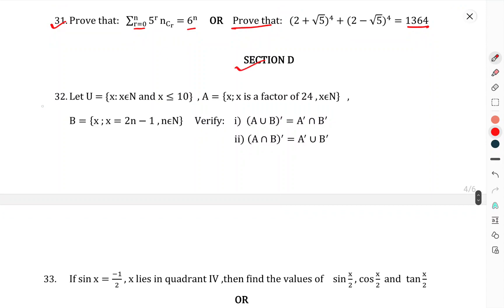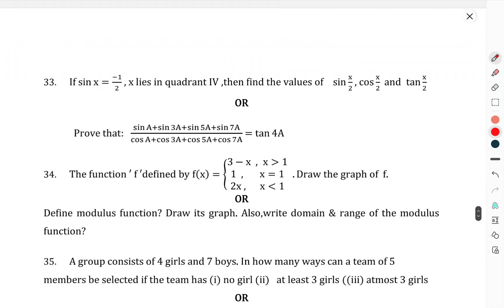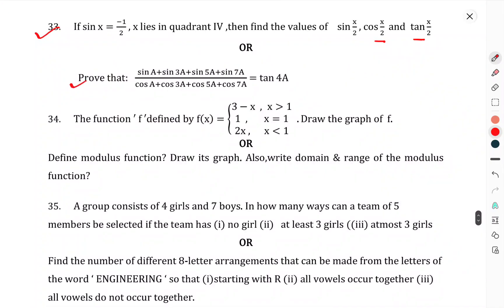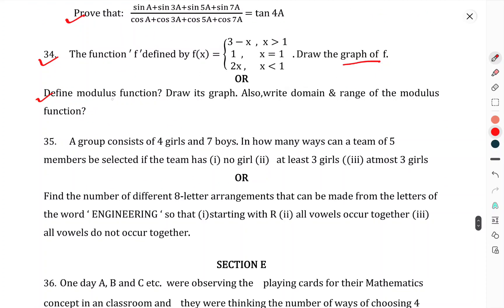Now we come to Section D. Question number 32: Let U = {x: x ∈ N, x ≤ 10}, A = {x: x is a factor of 24, x ∈ N}, and B = {x: x = 2n - 1, n ∈ N}. Verify the given statements. Question number 33: If sin x equals -1/2 and x lies in quadrant 4, then find the values of sin(x/2), cos(x/2), and tan(x/2). Or prove that (sin a + sin 3a + sin 5a + sin 7a)/(cos a + cos 3a + cos 5a + cos 7a) equals tan 4a. Question 34: The function f defined by f(x) equals... draw the graph of function f. Or determine and define the modulus function, draw its graph, and write the domain and range of the modulus function.